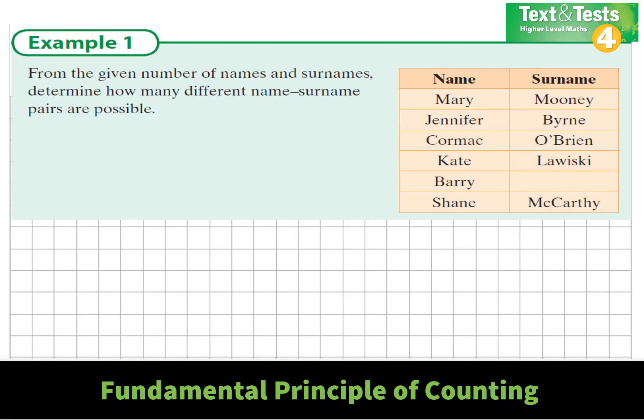This question is a little bit like a menu type question. From a given number of names and surnames, determine how many different name-surname pairs are possible.